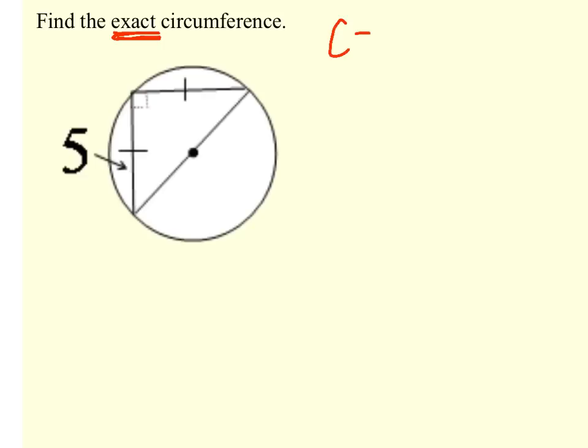So, we know that circumference is equal to pi times diameter. And if I look at this picture, this is the diameter. So, if I can find d, I'll be able to find the exact circumference. So, what you have to recognize is that we are working with a special right triangle.